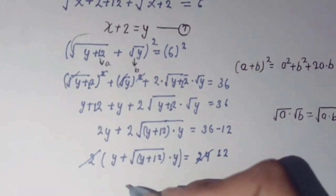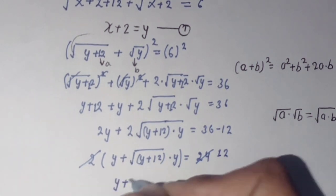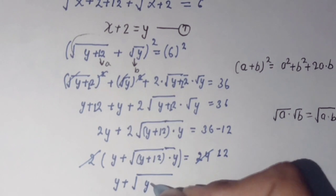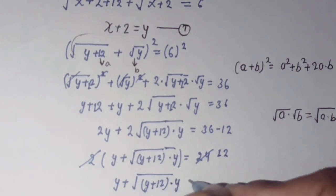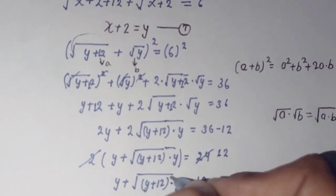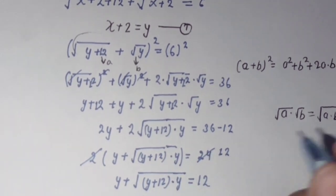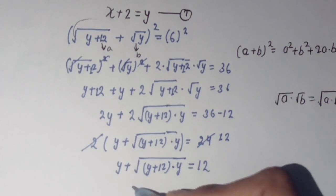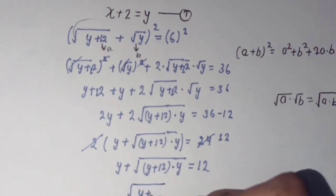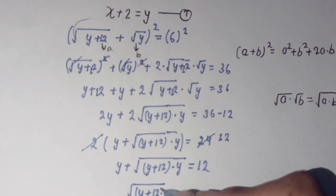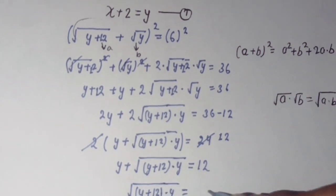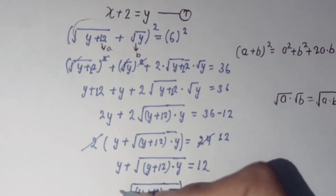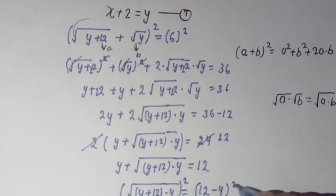So we have square root of (y(y + 12)) = 12 minus y. Squaring both sides again, we apply the identity (a - b)² = a² - 2ab + b², where a = 12 and b = square root of y.